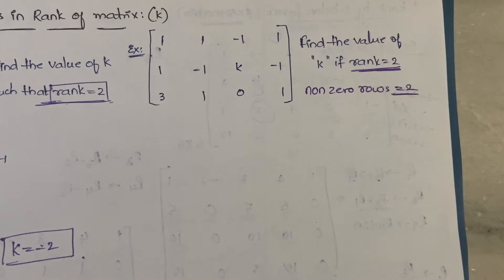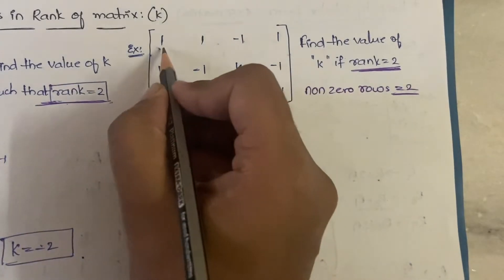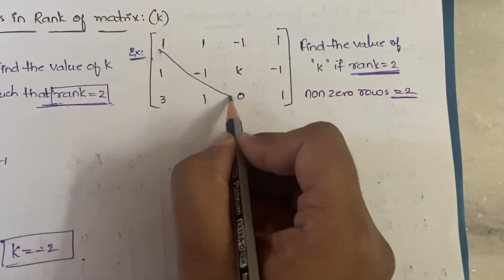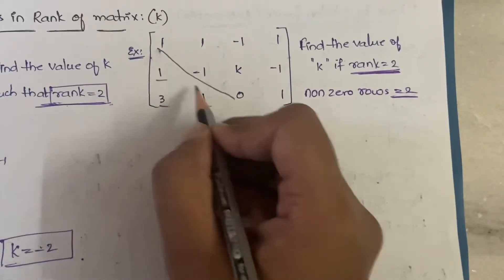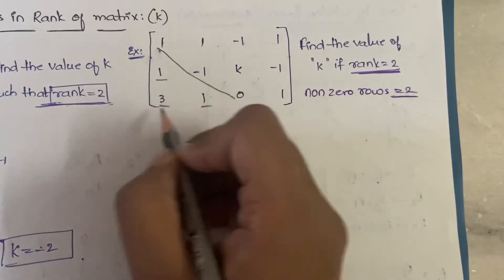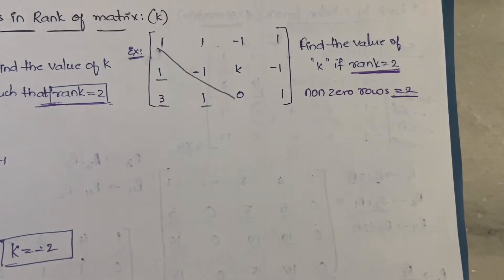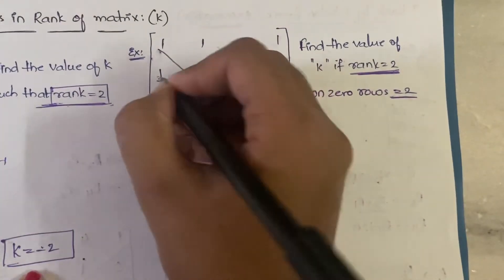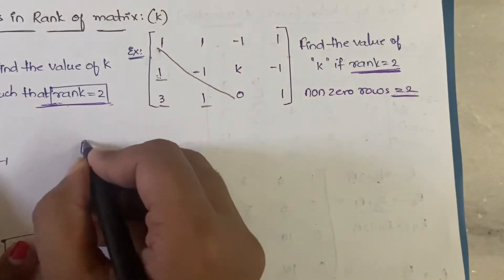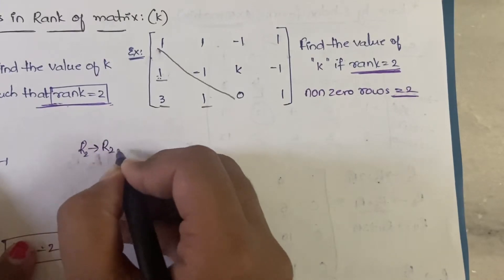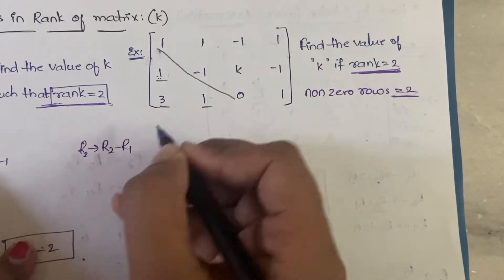First, we need to identify the diagonal. Let's mark the elements below the diagonal — we need to make those three elements zero. To make the first one zero, we use R2 = R2 - R1. One minus one gives zero.